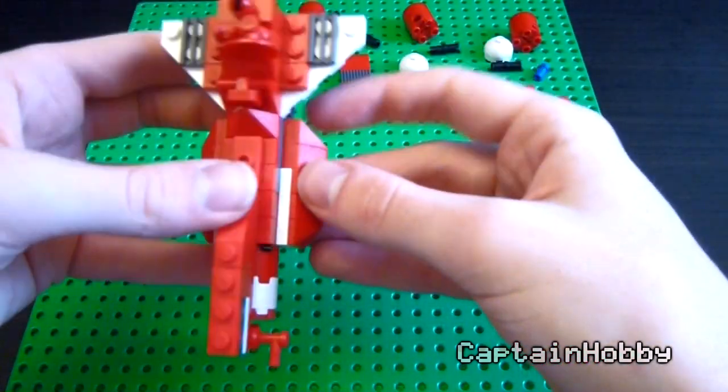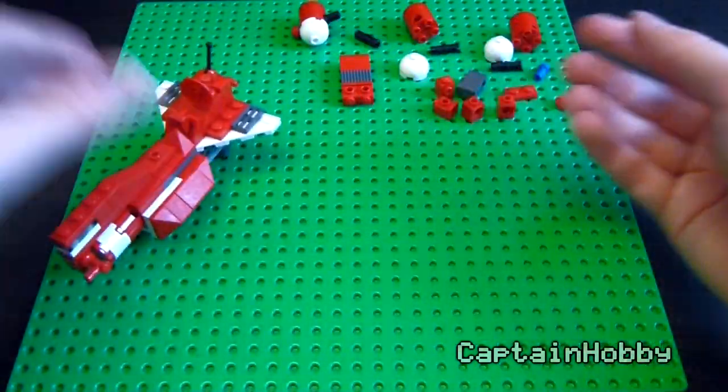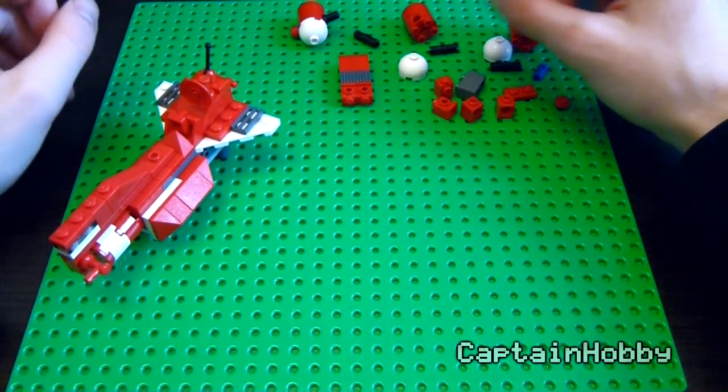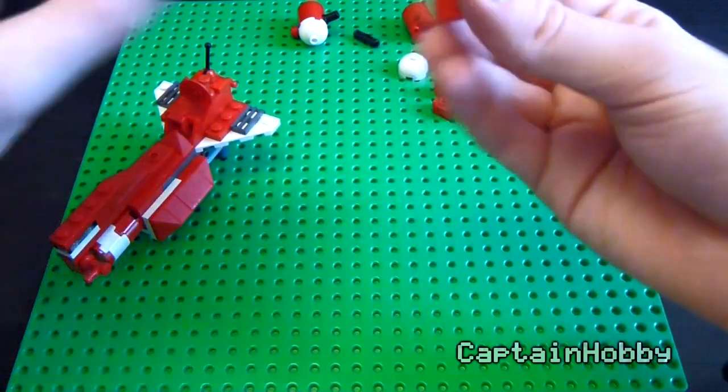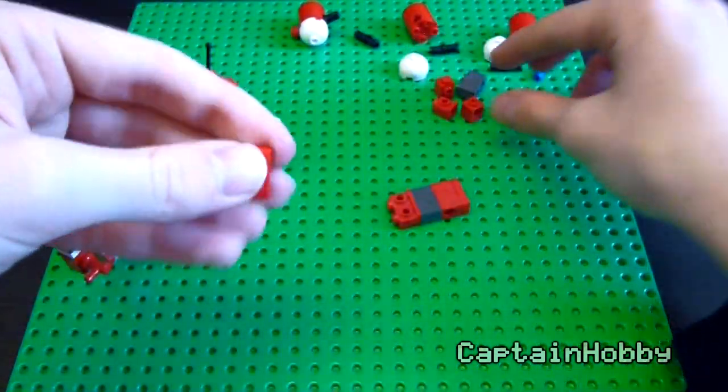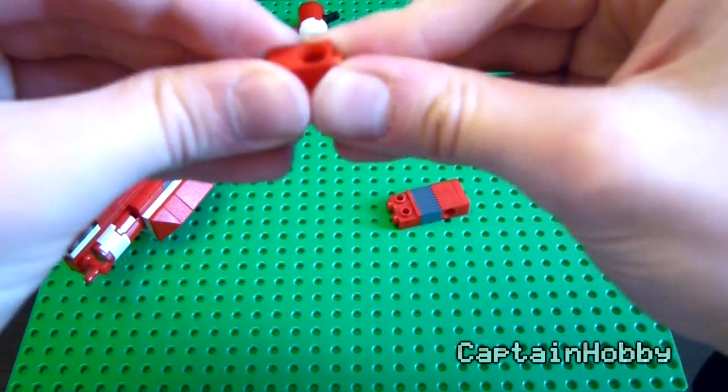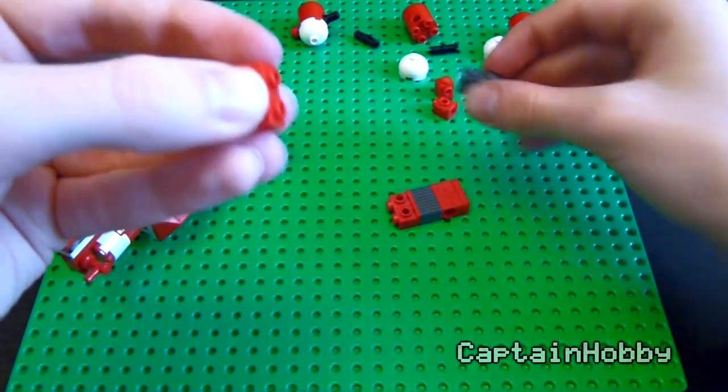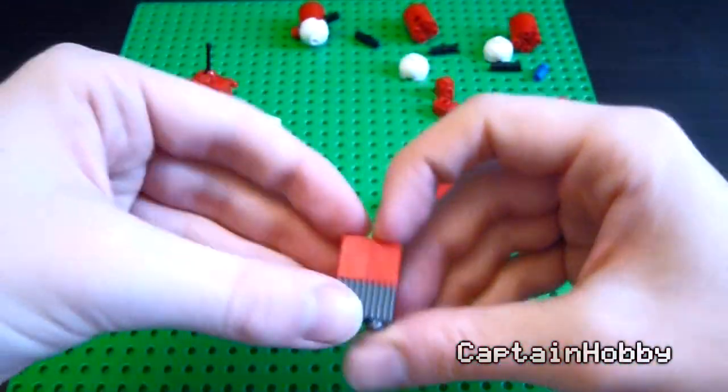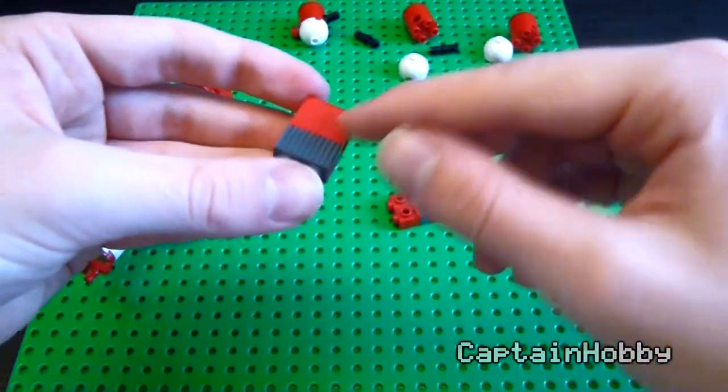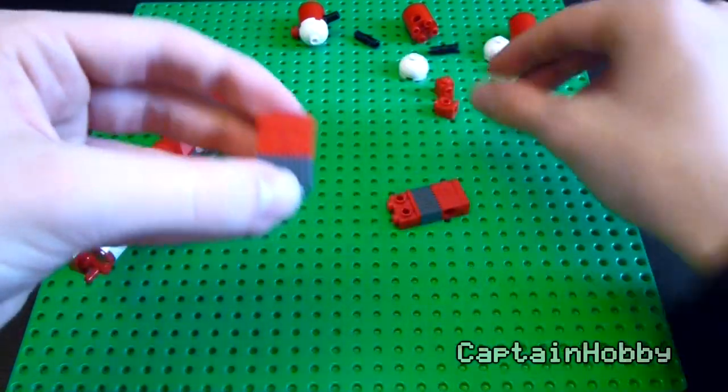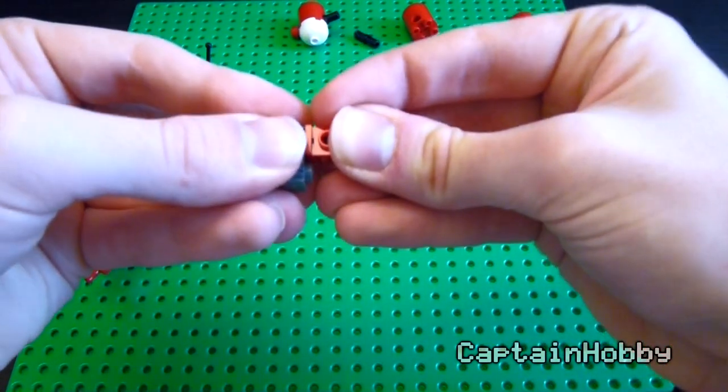And now finally we build the, I guess the engines or whatever, the thrusters. I don't know what they're called. It's a spaceship. Who cares? So we'll want to make this thing twice. Start with a 1x2 plate in red, and then two red Technic bricks, one of these textured 1x2 bricks in dark gray. Have the vertical lines be the side that faces up, horizontal lines to the bottom, and then two headlight bricks in red.